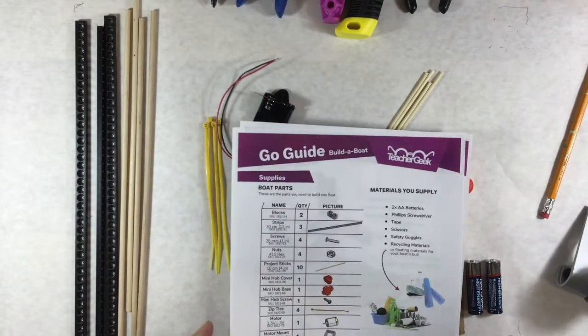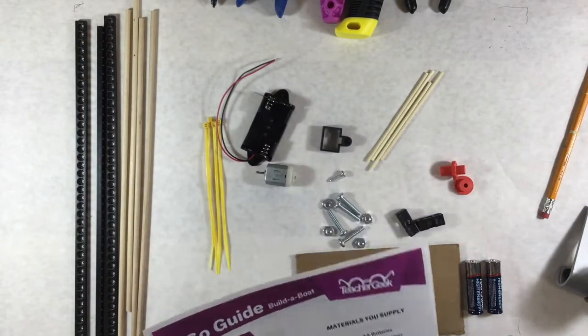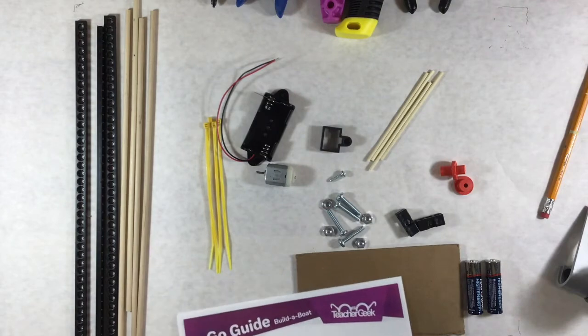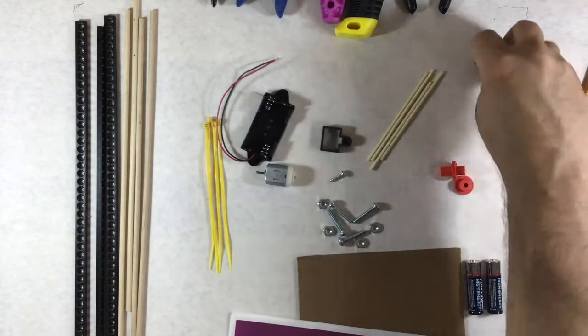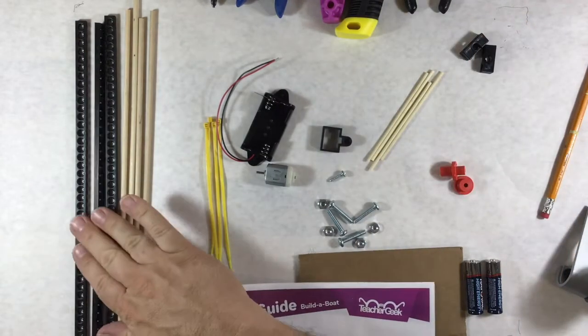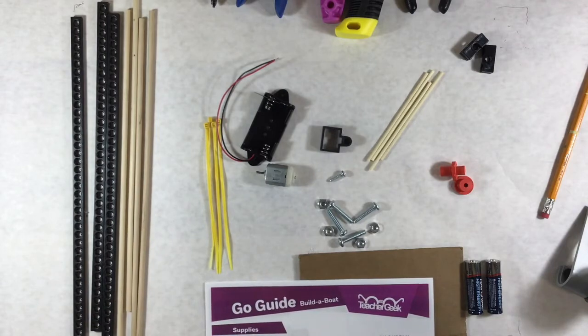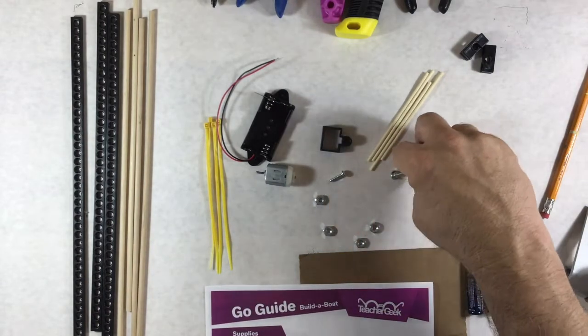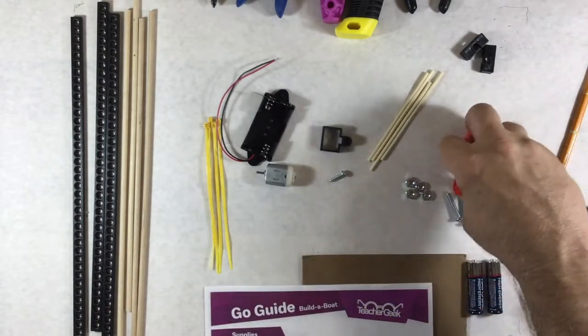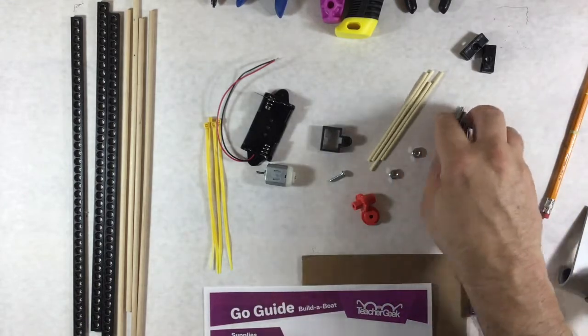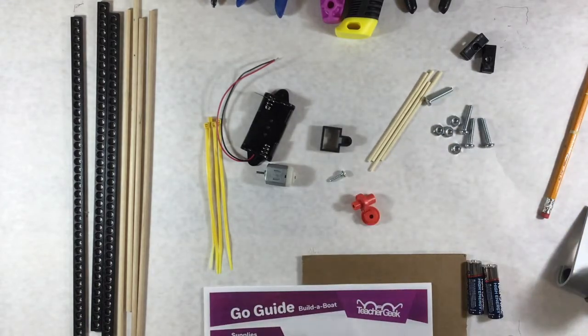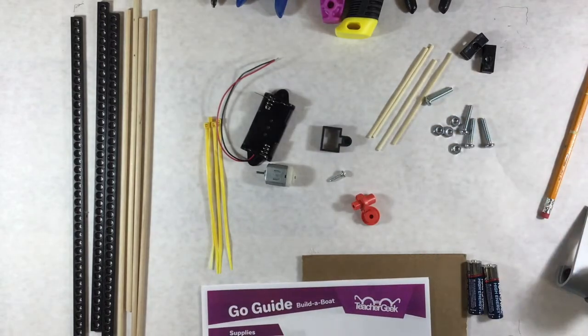Let's go down the list. We need a couple of blocks, we need three of these black strips, we need four screws and four nuts, we need ten project sticks. I only grabbed a few because I know I only need three of those actually for my first trial.